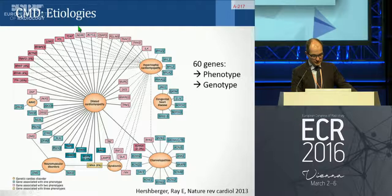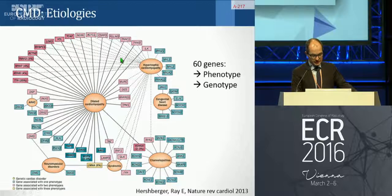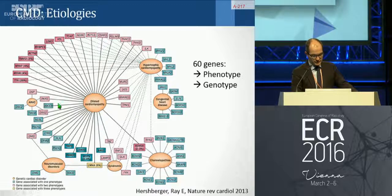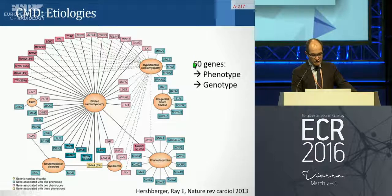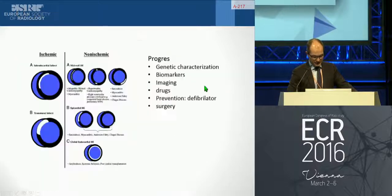Some genes could give two different phenotypes. For example, one gene could give both a dilated phenotype and a hypertrophic phenotype. Some of those diseases might be interrelated, so we have to define not only the phenotype but also the genotype of the disease. A lot of progress has been made in genetic characterization.